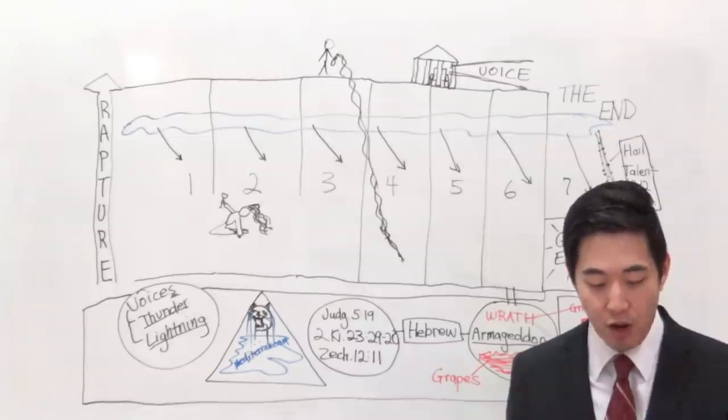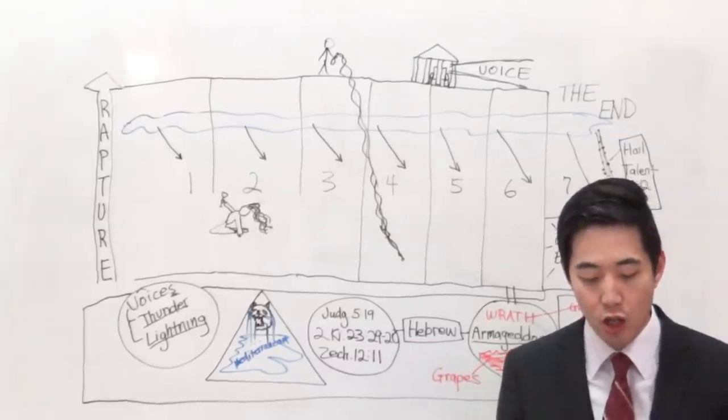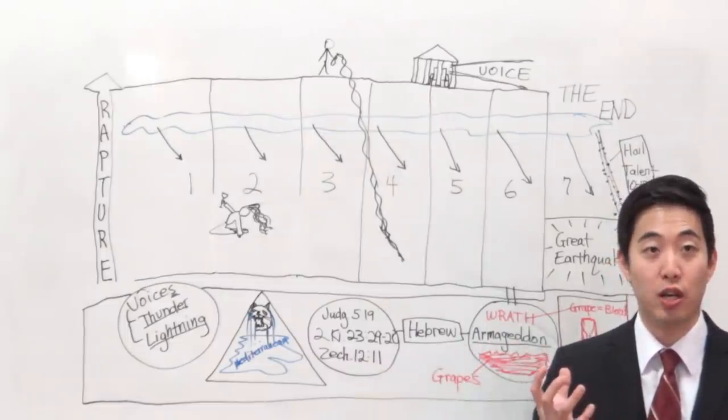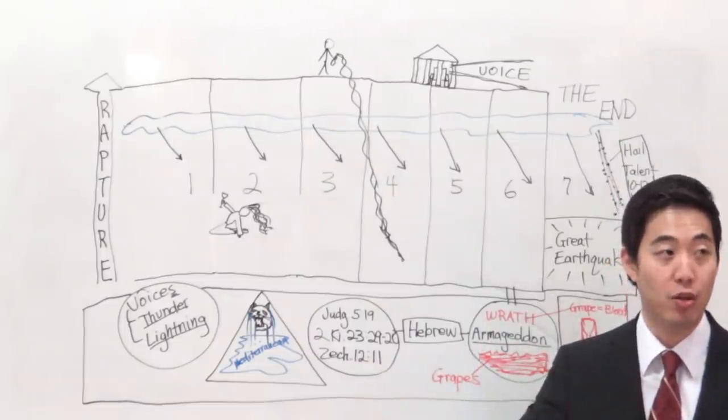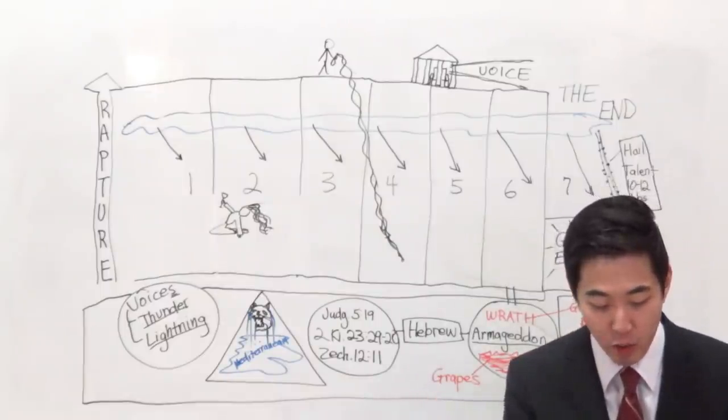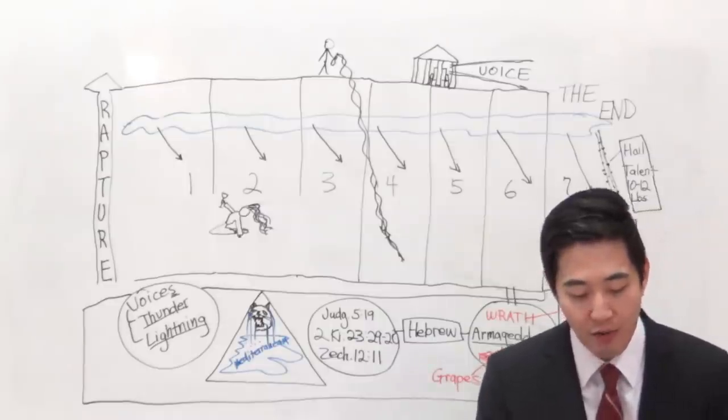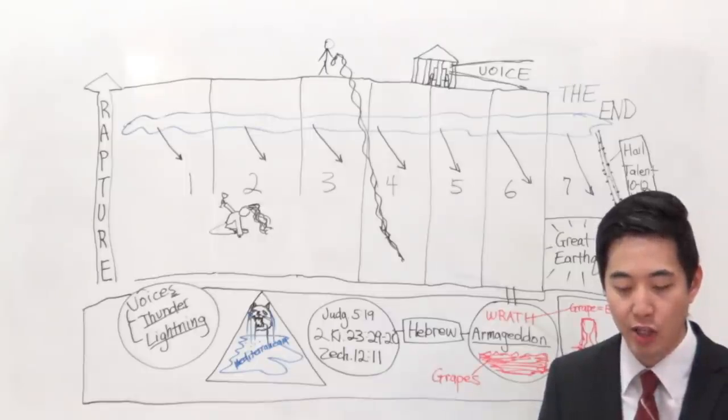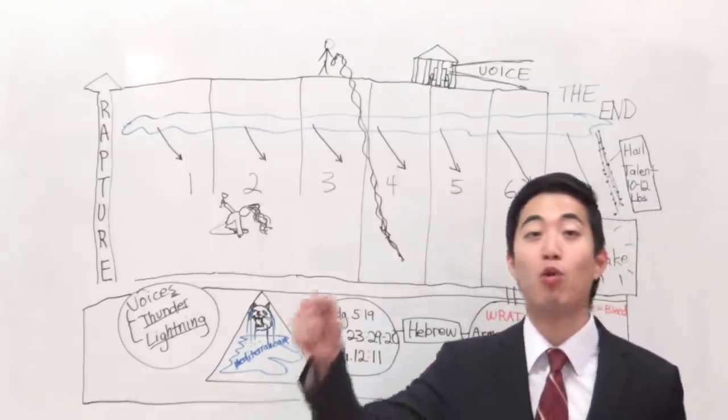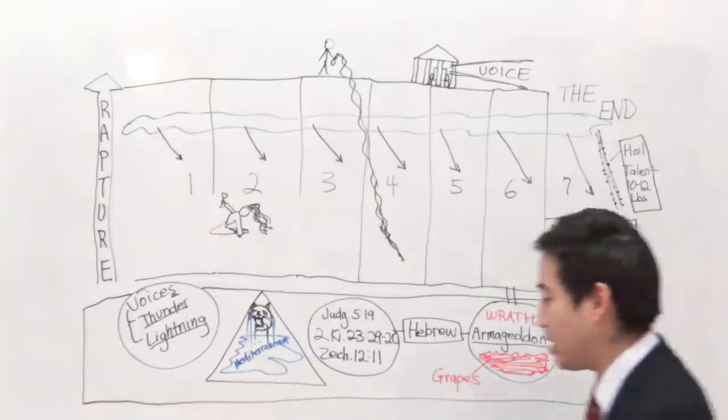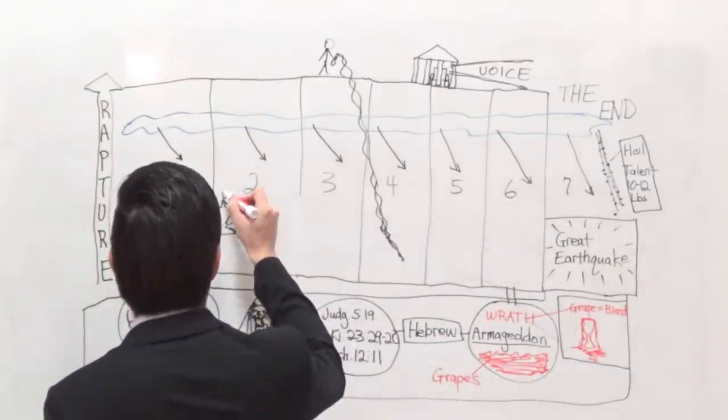Verse 2, with whom the kings of the earth have committed fornication. So whoever this woman is, she has such power where she can seduce the kings of the earth. So the Bible uses that metaphorical phrase where they commit fornication with her. And the inhabitants of the earth, so people all over the world, have been made drunk with the wine of her fornication. So they were made drunk with what? Metaphorically, her wine, that's called fornication. All right, so let's look at this wine, shall we?